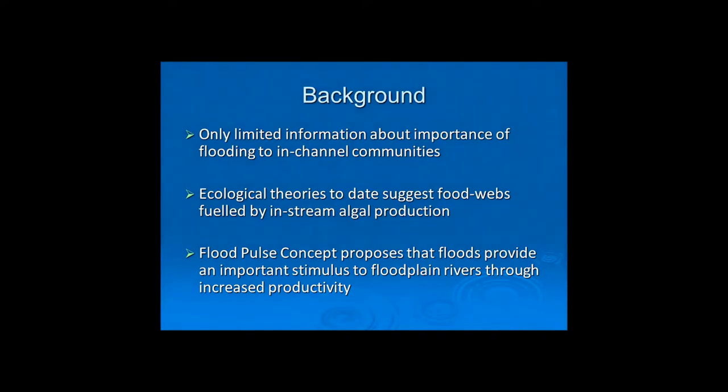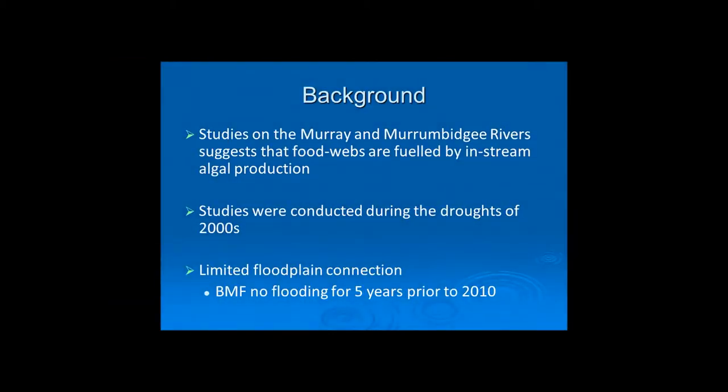There's only limited information about the importance of flooding to in-channel communities. Ecological theories to date suggest that food webs are fuelled almost entirely by in-stream algal production. However, the flood pulse concept proposed that floods provide an important stimulus to floodplain rivers by increasing productivity. Studies on the Murray and Murrumbidgee Rivers suggest food webs are fuelled by in-stream algal production, but these studies were conducted through the 2000s — largely during drought — with limited floodplain connection.